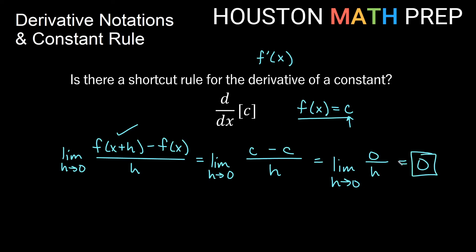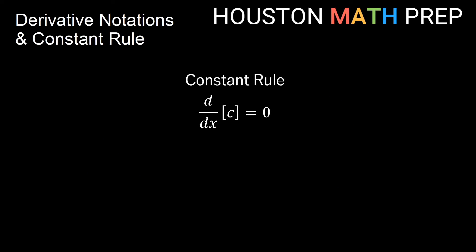So our constant rule for derivatives, our shortcut is the derivative of any constant is just going to be 0. This is one of the shortest shortcuts for derivatives. And you can remember this constant rule pretty easily. The derivative of any constant is 0.